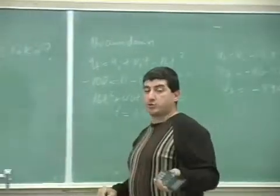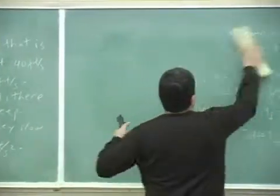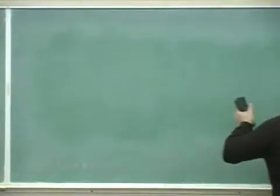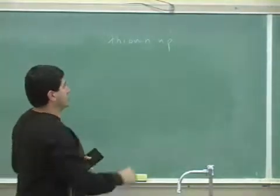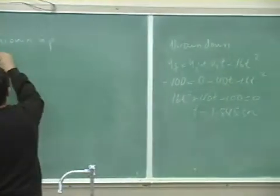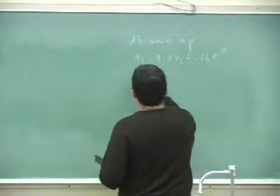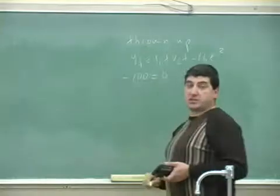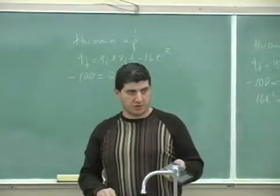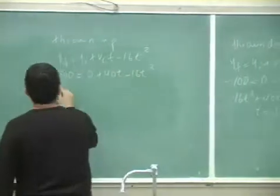And now we could do the one thrown up. So you start out with the same equation. y-final is negative 100. y-initial is 0. The initial, the difference now is positive 40, since you threw it up. Then take this over to the other side.